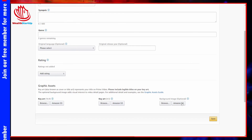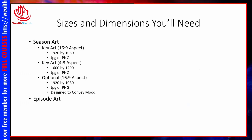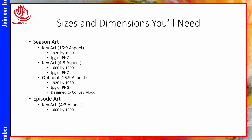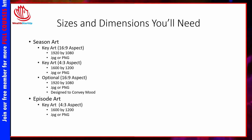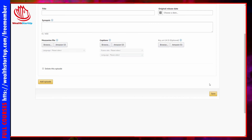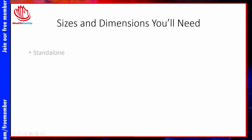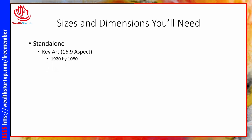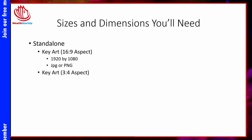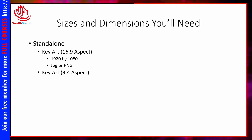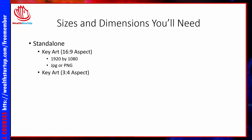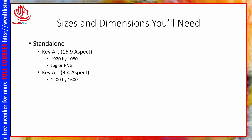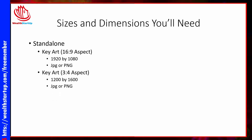You can also include artwork for individual episodes, requiring a 4 by 3 key art aspect ratio at 1600 by 1200 JPEG or PNG. For standalone videos, the key art has a 16 by 9 aspect ratio at 1920 by 1080 JPEG or PNG. There is also a second key art piece at 3 by 4 ratio — 1200 by 1600 JPEG or PNG. Pay attention to that: it's a little different from the other size. There's also an optional background image at 1920 by 1080.